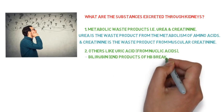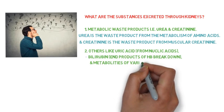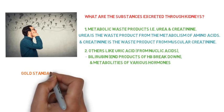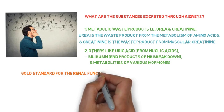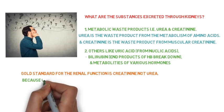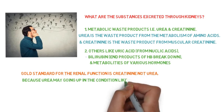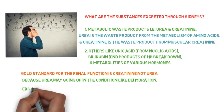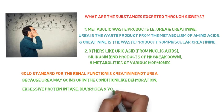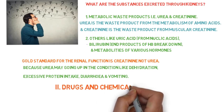Other metabolic waste products also include metabolites of various hormones. The gold standard for renal function is creatinine, not urea, because urea may go up in conditions like dehydration, excessive protein intake, diarrhea, or vomiting. Number two substances excreted are drugs and chemicals, and number three are toxins.